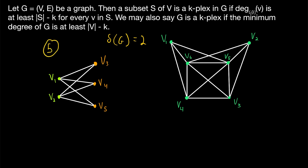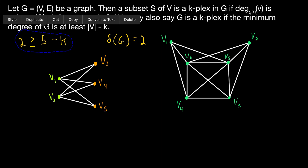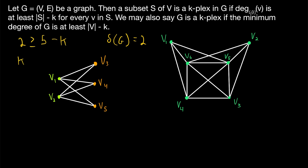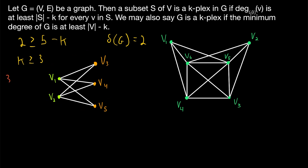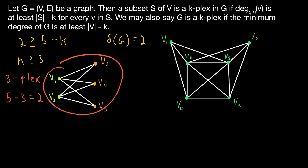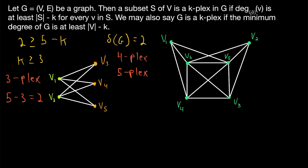Note that this notation for minimum degree is not quite universal — in fact, the paper that introduced k-plexes used lowercase delta of g to indicate the diameter of g, not minimum degree. But for our purposes, the minimum degree of g is 2. The order of this graph is 5, so by definition of k-plex, the graph will be a k-plex whenever its minimum degree, which is 2, is at least 5 minus k. Solving for k, our graph will be a k-plex for every positive integer k that is greater than or equal to 5 minus 2, which is 3. So this graph — which you might notice is a complete bipartite graph — is certainly a three-plex, a four-plex, a five-plex, and so on for greater values of k.